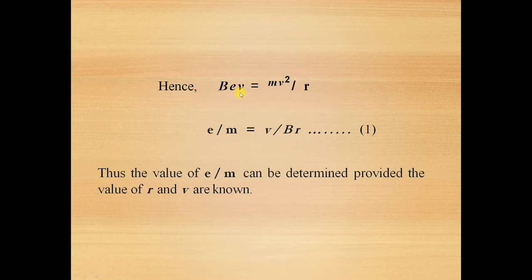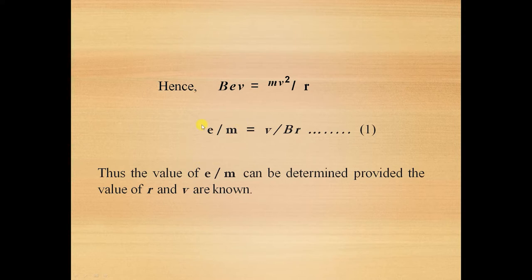Since these two forces are equal, we can write BEV = MV²/R, and we get E/M = V/BR. So our requirement is to obtain the value of E/M — the charge-to-mass ratio of the electrons — which can be obtained by this formula: V divided by BR.